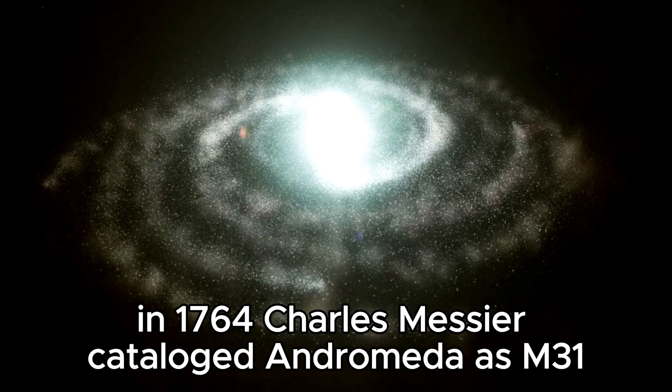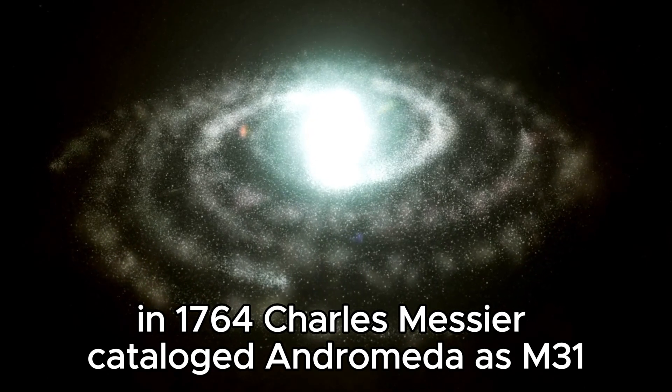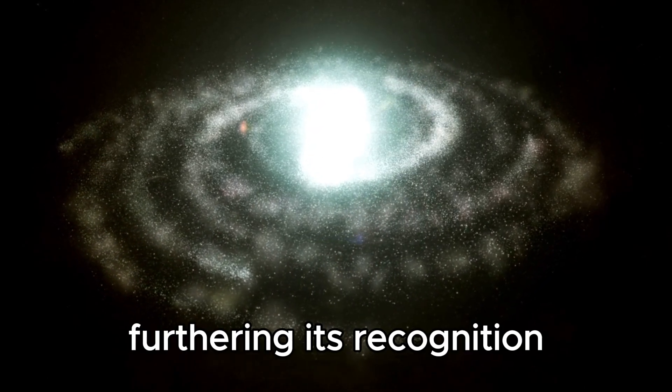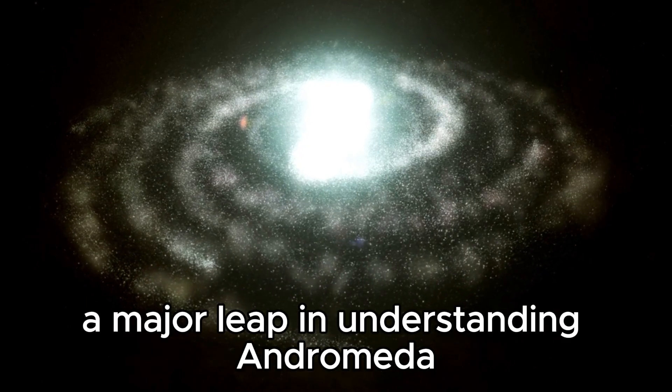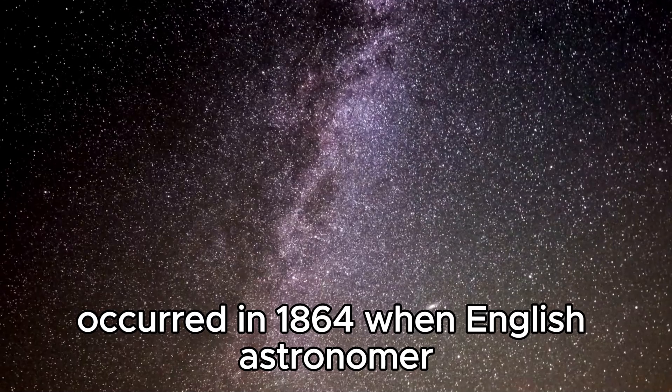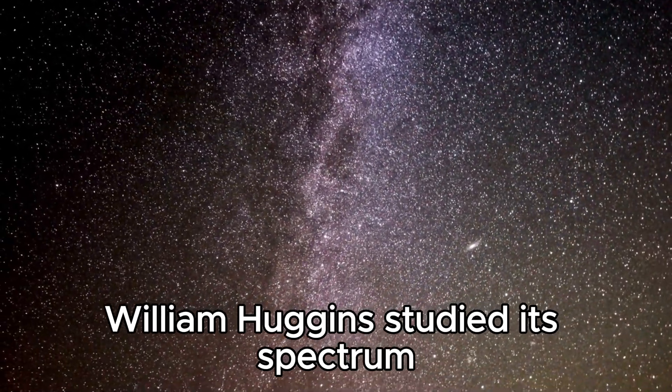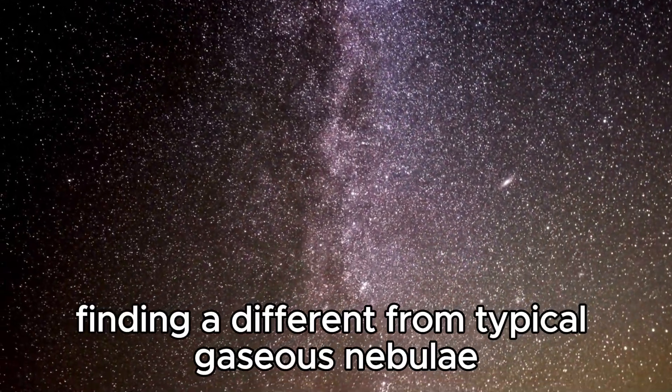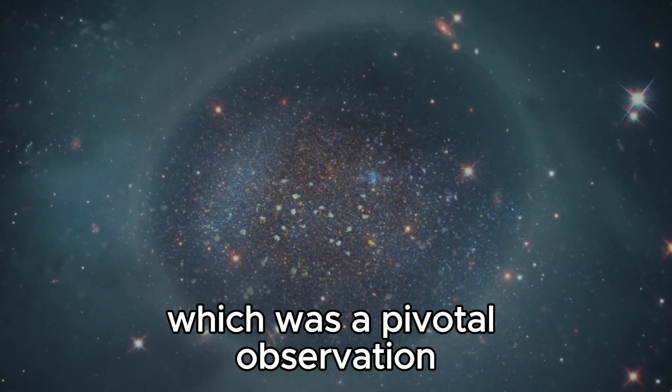In 1764, Charles Messier catalogued Andromeda as M31, furthering its recognition. A major leap in understanding Andromeda occurred in 1864 when English astronomer William Huggins studied its spectrum, finding it different from typical gaseous nebulae, which was a pivotal observation.